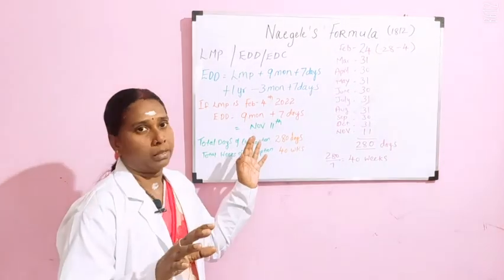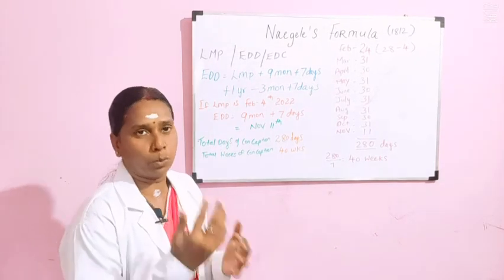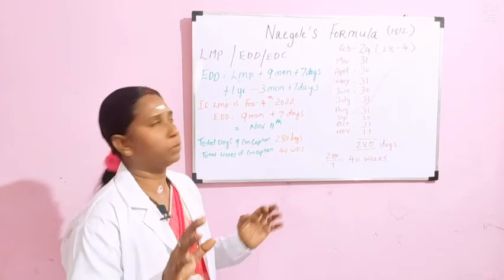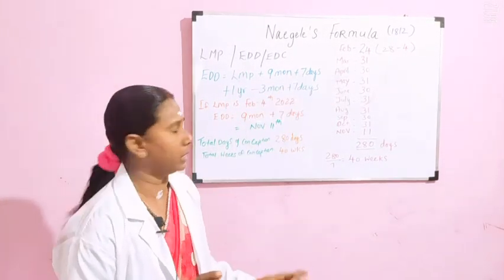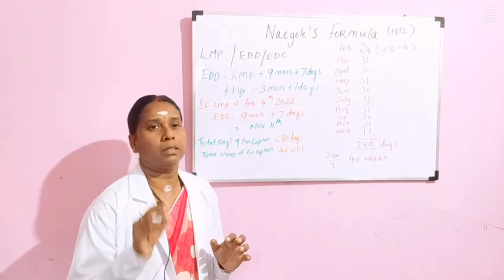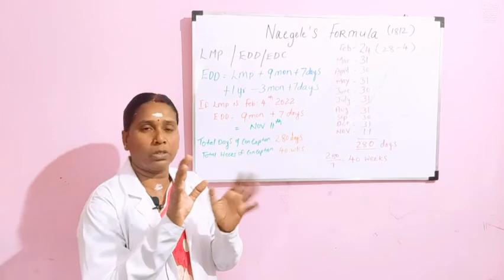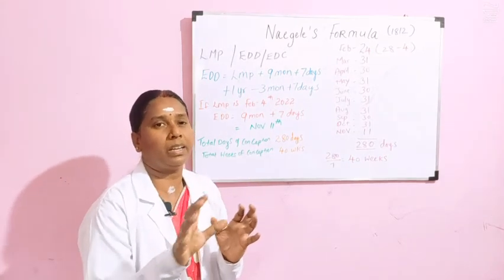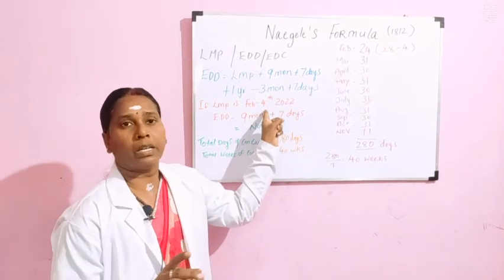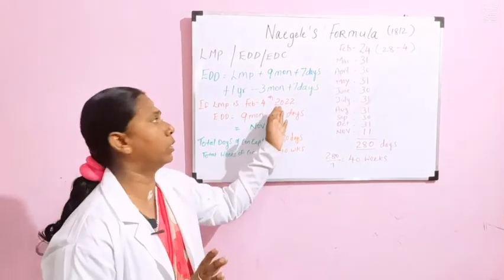There is also another formula: LMP plus 1 year minus 3 months plus 7 days. Whatever formula you apply, the days and weeks will come out the same. Let's discuss the 9 months and 7 days approach first. Imagine you want to calculate an EDD — take any LMP date. For example, I am taking February 4th. February usually has 28 days, which gives a little difficulty in calculating, so I have taken this month on purpose. Imagine February 4th, 2022 is the LMP.